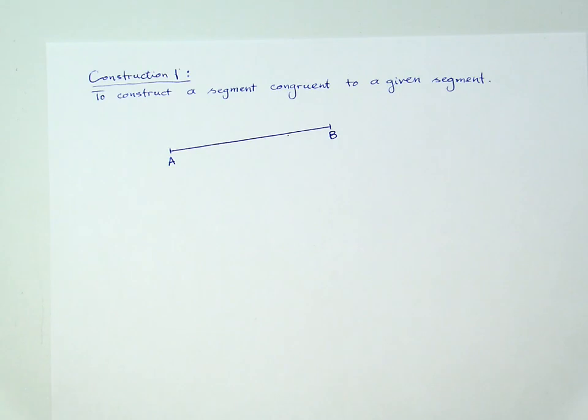The following is the demonstration of the first construction in our geometric class. The first construction: to construct a segment congruent to a given segment.